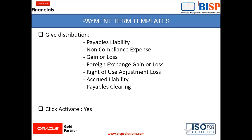In the distribution section, we need to specify: payable liability, non-compliance expense, gain or loss, foreign exchange gain or loss, right of use adjustment loss, accrued liability, tables clearing — and we need to specify this for both the primary and secondary ledger.